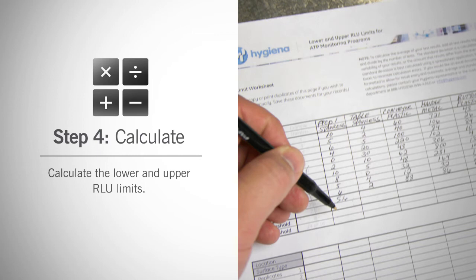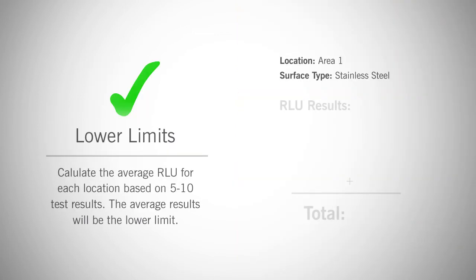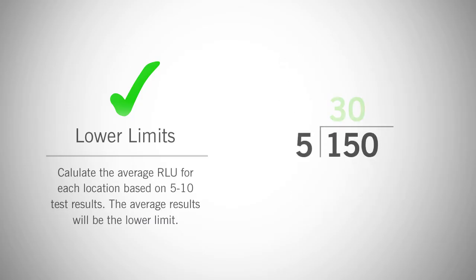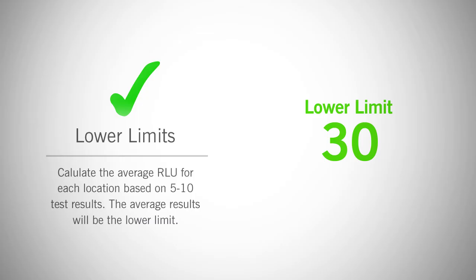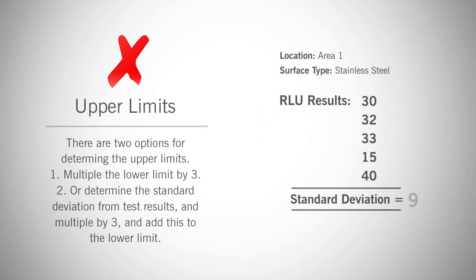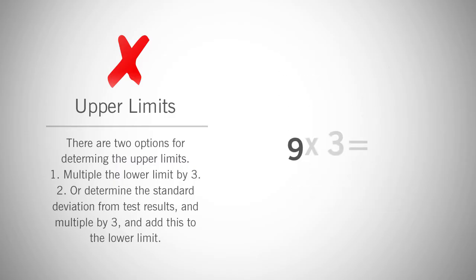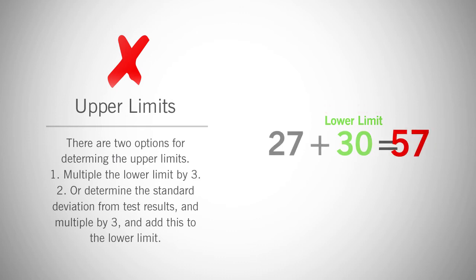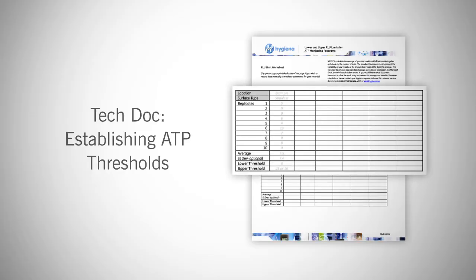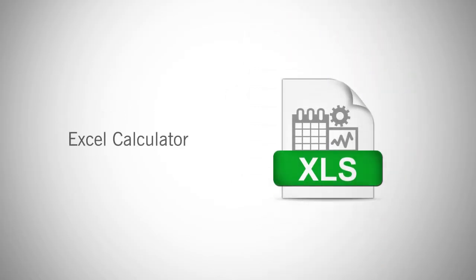Step four: calculate the lower and upper RLU limits. To calculate the lower RLU limit, take the average RLU for each location based on the five to ten test results. The average result will be the lower RLU limit. To calculate the upper RLU limit, you can either multiply the lower limit by three, or for the most statistically sound method, determine the standard deviation from the test results, multiply the standard deviation by three, and add this to the lower limit. For written instructions and a spreadsheet, download the technical document entitled 'Establishing ATP Thresholds' from Hygiena.com, or contact us for an Excel calculator.